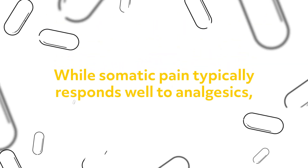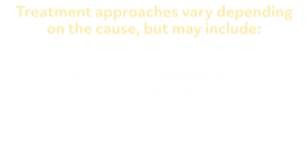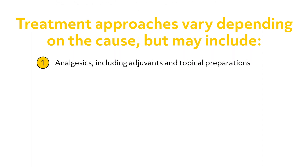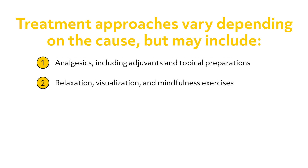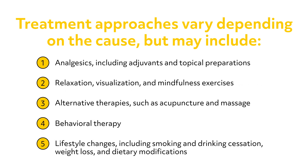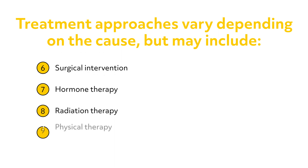While somatic pain typically responds well to analgesics, visceral pain can be more difficult to control. Treatment approaches vary depending on the cause, but may include analgesics including adjuvants and topical preparations, relaxation, visualization, and mindfulness exercises, alternative therapies such as acupuncture and massage, behavioral therapy, lifestyle changes including smoking and drinking cessation, weight loss and dietary modifications, surgical intervention, hormone therapy, radiation therapy, and physical therapy.